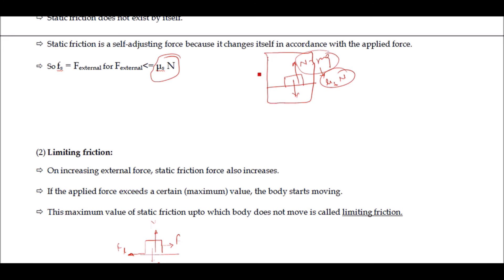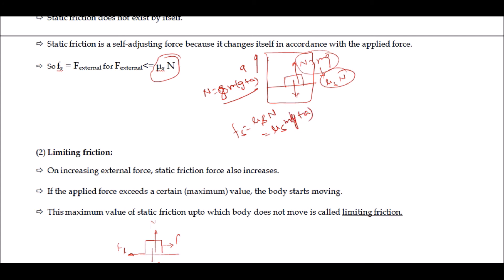If I change the normal force — for example, if I place this object in a lift moving upward with acceleration a — we already learned in the law of motion that the normal reaction changes to N equals m(g + a). The value of normal reaction has changed, and in this case the frictional force changes to μs times N, which equals μs times m(g + a).